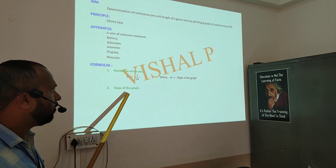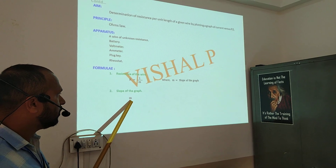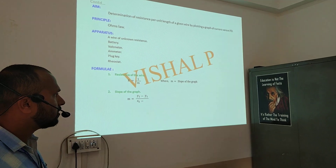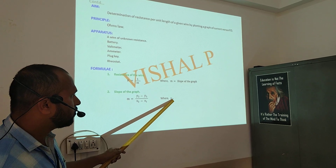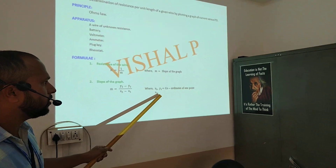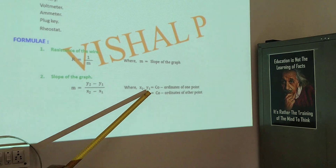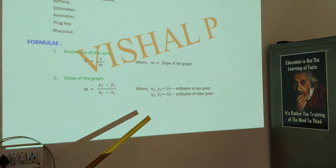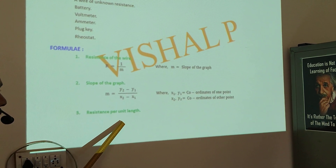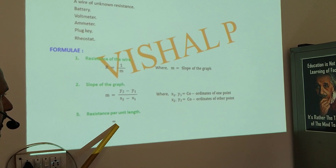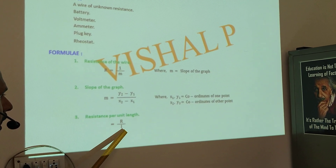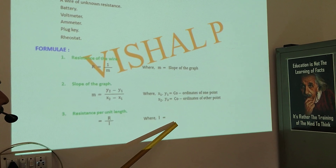The second formula is the slope of the graph. M is equals to Y2 minus Y1 divided by X2 minus X1, where X1, Y1 are the coordinates of one point and X2, Y2 are the coordinates of the other point. You take two points on the graph. The third formula is resistance per unit length of the wire, given by R divided by L, where L is the length of the wire.